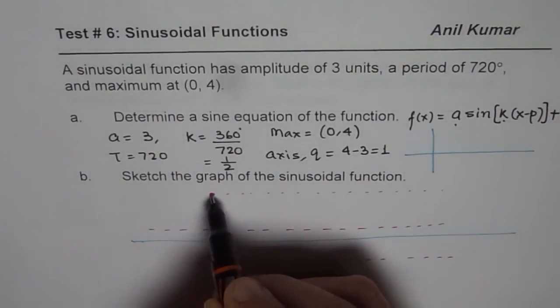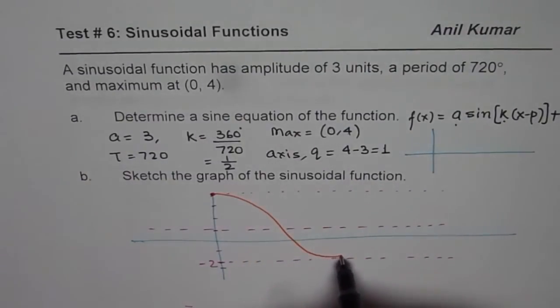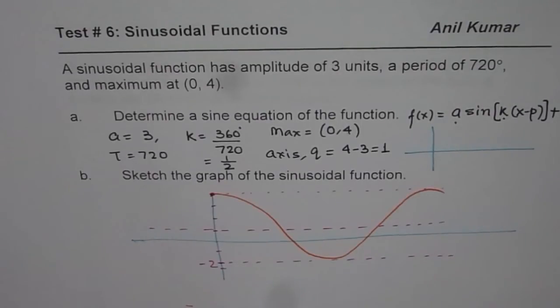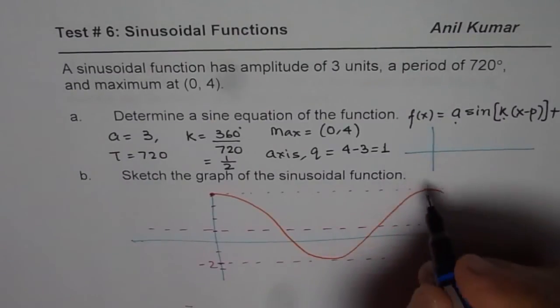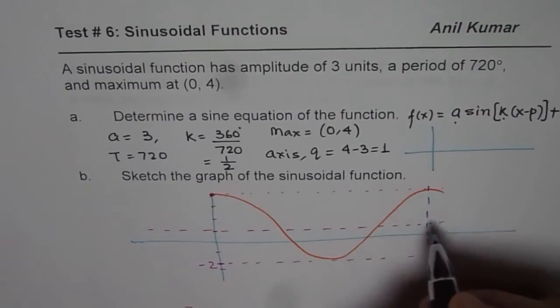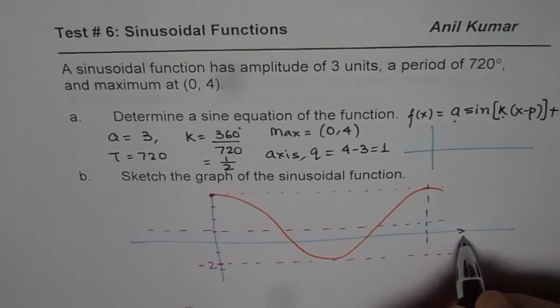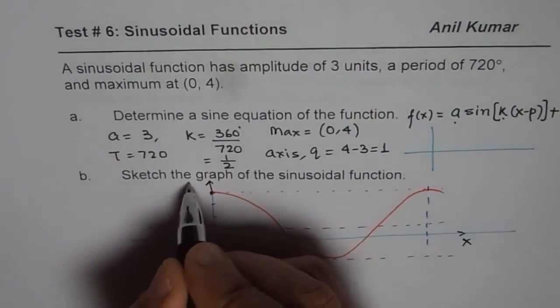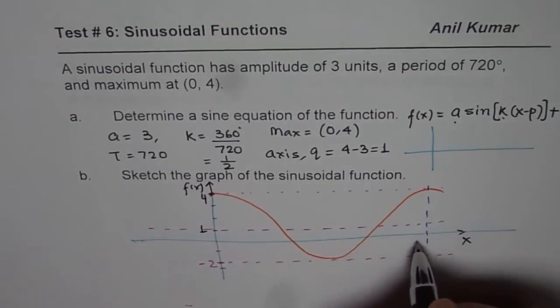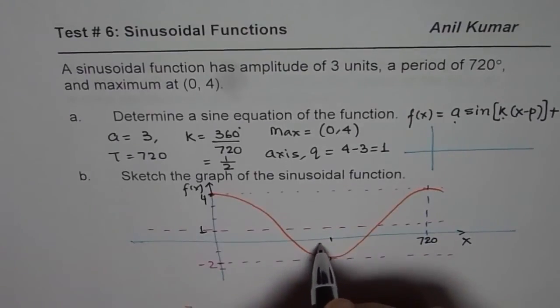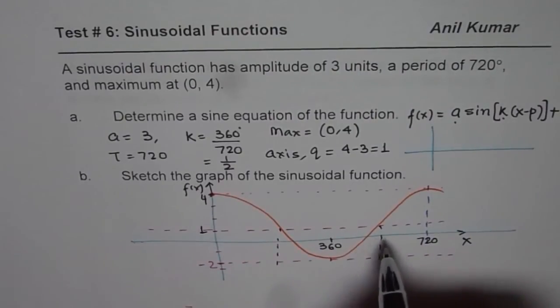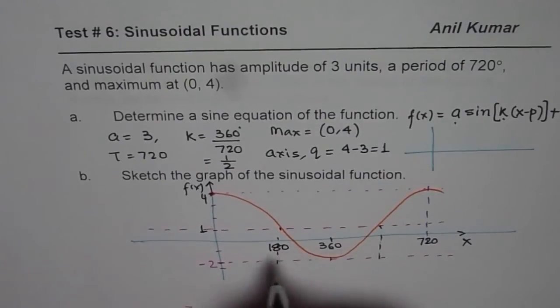That is one wave. We know that the time period is 720. So this maximum should be at 720. We can now write down along the horizontal x-axis. Let us say, this is x in degrees and this is f(x). We know this point is at 4. This is at 1 minus 2. 720 is the time period. Half of 720 is 360. These are at quarters. My drawing may not be that accurate. But half of that is 180.